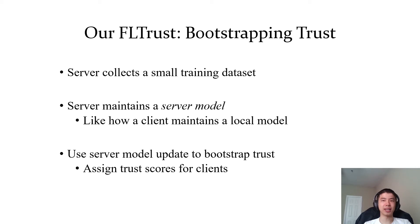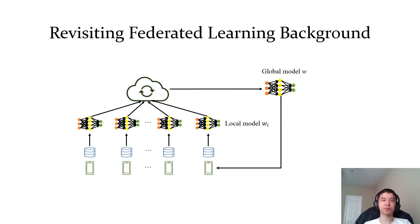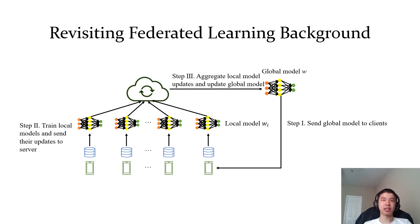The server aggregates the clients' local model updates to obtain a global model update based on the trust scores. This global model update is used to update the global model. In our method, we design a new aggregation rule in step three, and our new aggregation rule considers both the clients' local model updates and the server model update to update the global model.